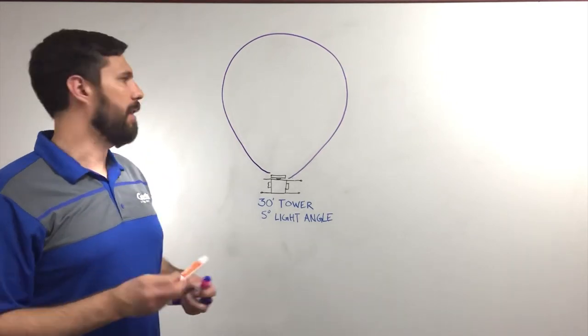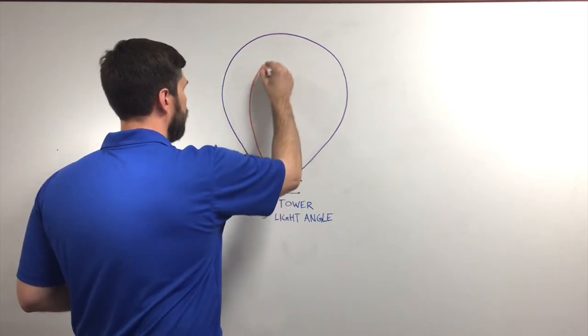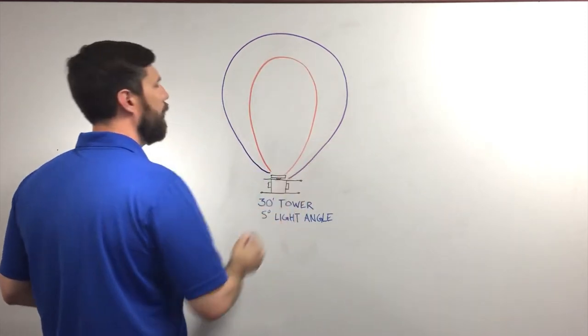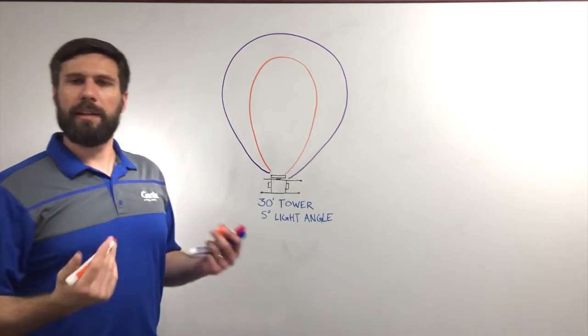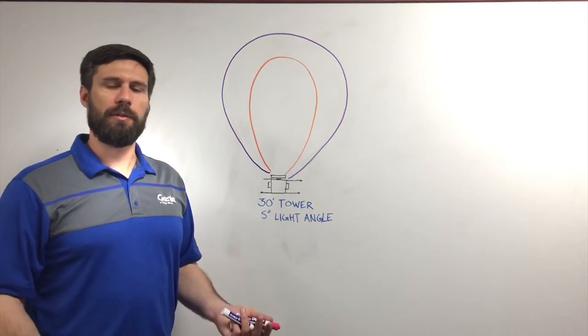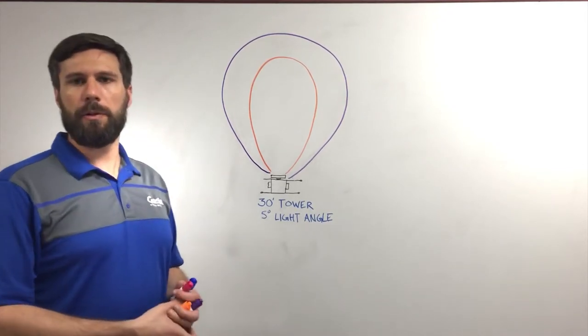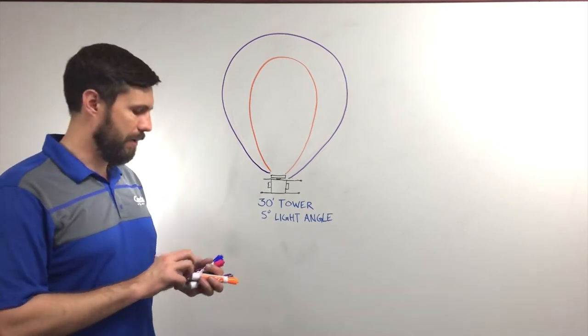So you may see a second circle inside of this. This will be a zone of at least one foot candle. One foot candle, again, you notice that there's light, but it may not be enough light to effectively do your job while you're out on the job site.